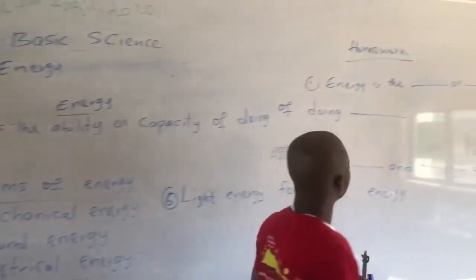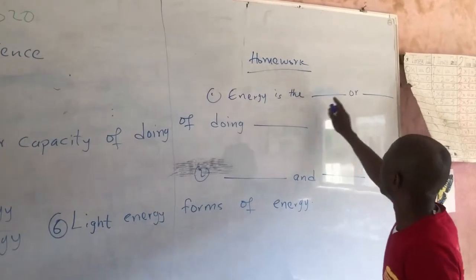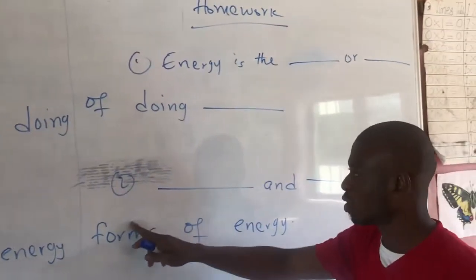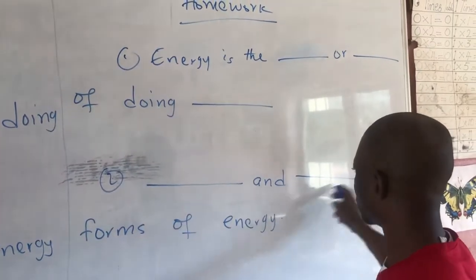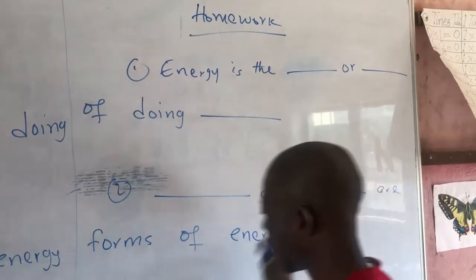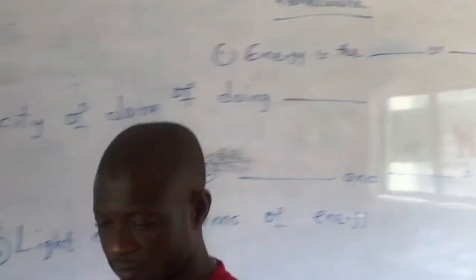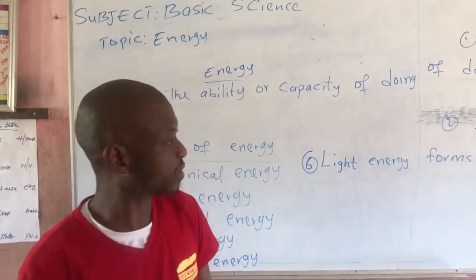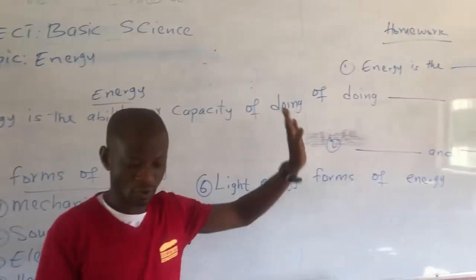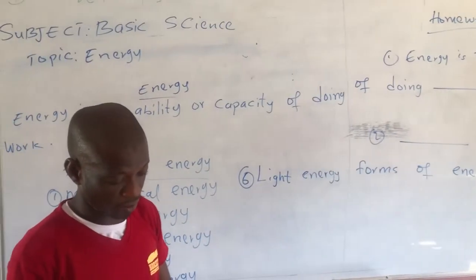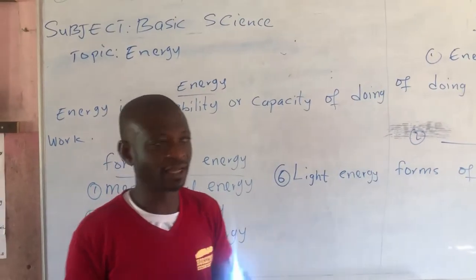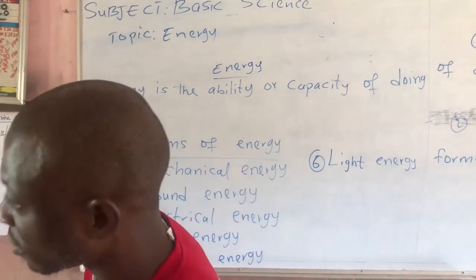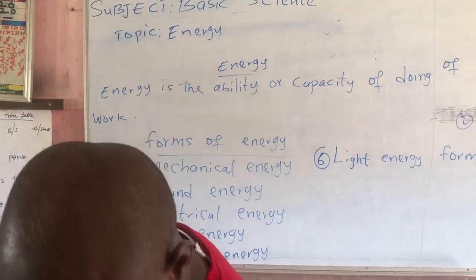This is your homework, children. We say energy is the dash or dash of doing dash. Two, we say dash and dash are forms of energy. So I gave you this — you do it. Is it difficult, children? No. So all these are forms of energy. It's light energy, you can see it. I think I'm done with this one.